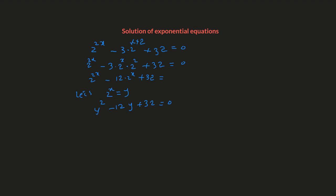Now the exponential equation has changed into a quadratic equation. There are three different techniques to solve a quadratic equation; we're going to use factorization. We split the middle term as negative 8y minus 4y plus 32 equals 0. Factoring by grouping, we get y times (y minus 8) minus 4 times (y minus 8) equals 0, which gives us (y minus 8)(y minus 4) equals 0.